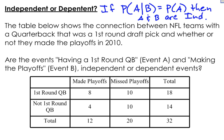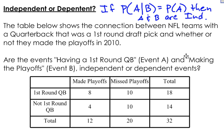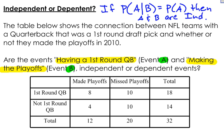Let's take a look at an example. The table below shows the connection between NFL teams with a quarterback that was a first-round draft pick and whether or not they made the playoffs in 2010. The question asks: are the events having a first-round quarterback and making the playoffs independent or dependent events?